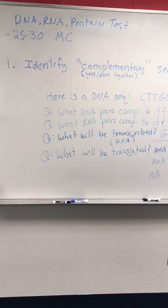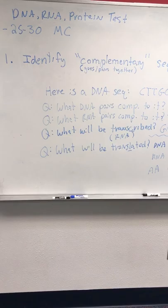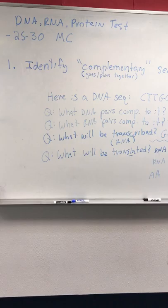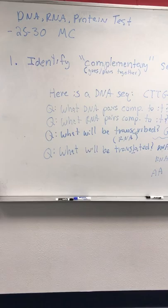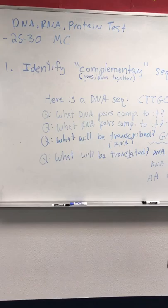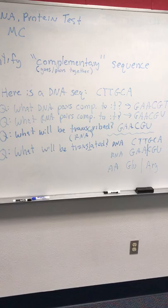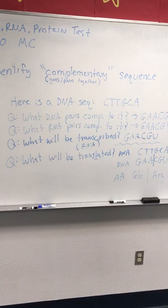That was the easy way to ask it. The harder way is: 'What will be transcribed?' Transcription is DNA to RNA — it comes first, before translation. So 'what will be transcribed' is the same as asking what RNA you get. From the sequence, C pairs to G, T to A, T to A, G to C, C to G, A to U.